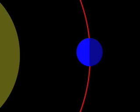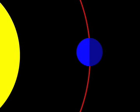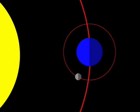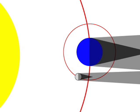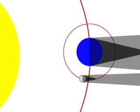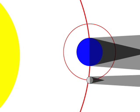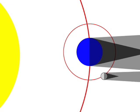As the Earth orbits around the Sun, the Sun shines on it and on the Moon. But the Earth casts its shadow, just like you do when you stand outside on a sunny day. So a lunar eclipse is what we see when the full Moon moves into the Earth's shadow.